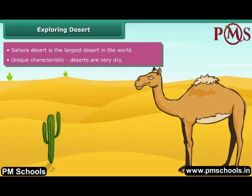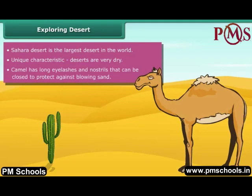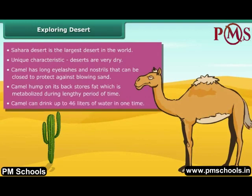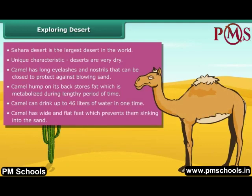Camel has many adaptations that are specifically suited to desert habitat. It has long eyelashes and nostrils that close to protect against blowing sand. A large hump on its back stores fat, which is metabolized during lengthy periods. Camels can drink up to 46 liters of water at one time and can live without water for a week. Wide and flat feet prevent the camel from sinking into the sand.